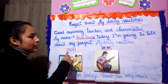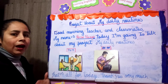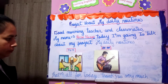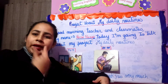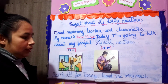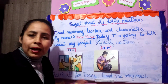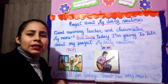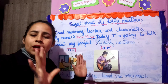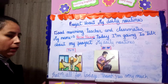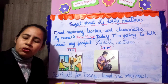Por ejemplo: It's a quarter past seven, I play the guitar. Y así continúas mencionando el resto de tus actividades que tú haces diariamente. Mínimo deben de ser diez actividades. Luego te despides diciendo: That's all for today. Thank you very much.